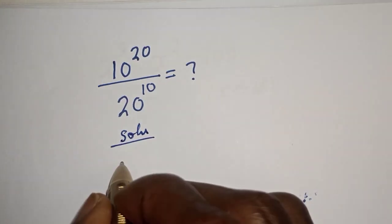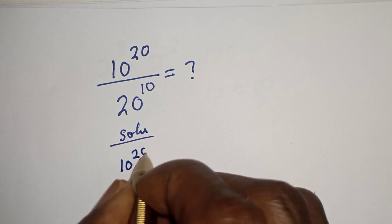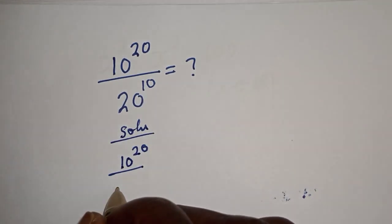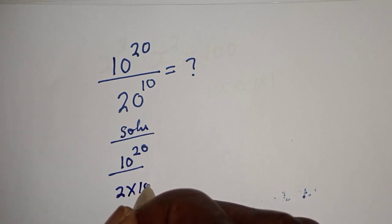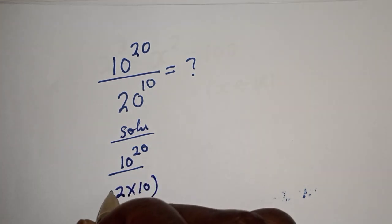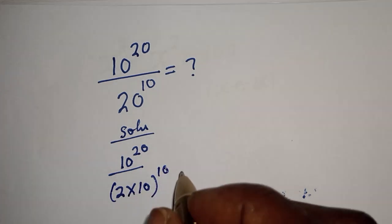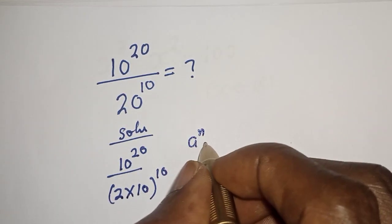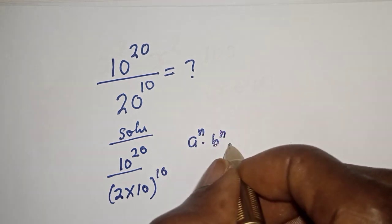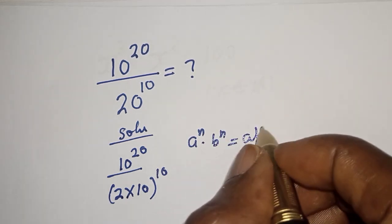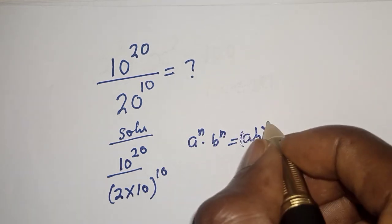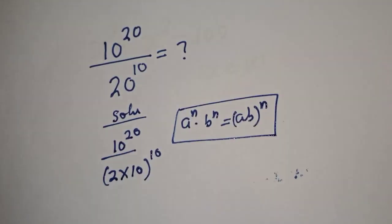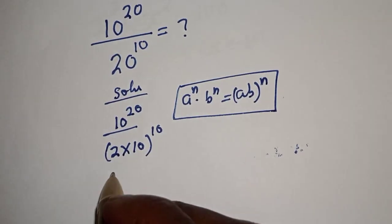We have 10 raised to power 20 divided by 20 raised to power 10. This can be written as 2 multiplied by 10, raised to the power of 10. Now, if you have a raised to power n multiplied by b raised to power n, this is equal to (ab) raised to the power of n.